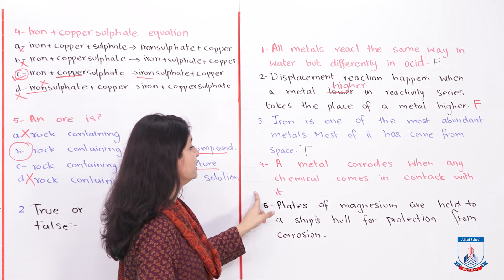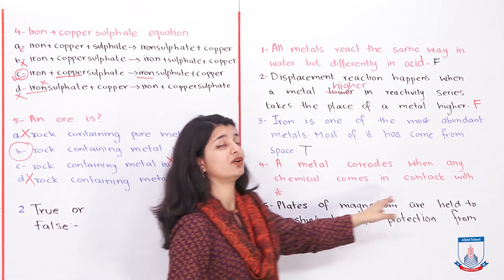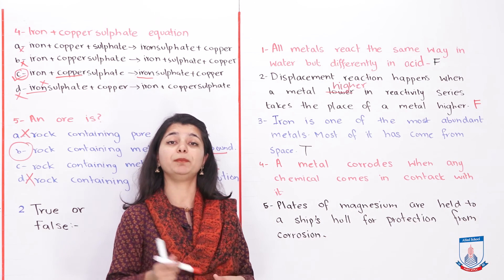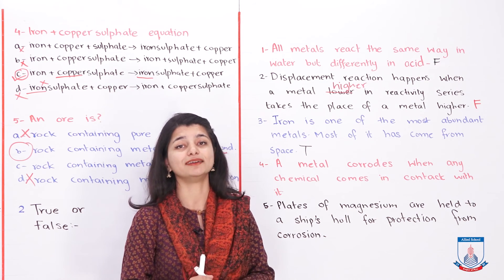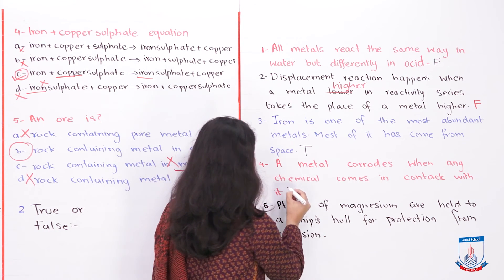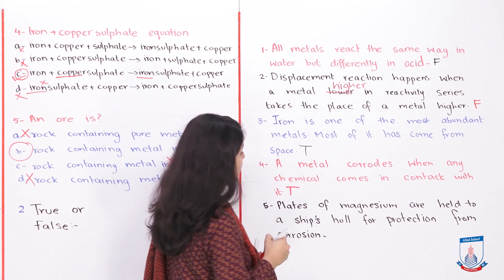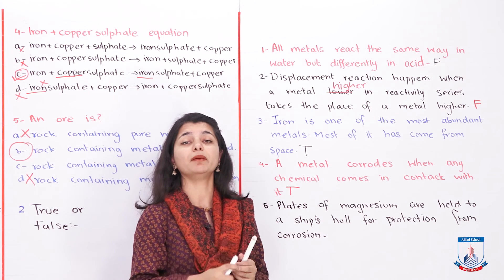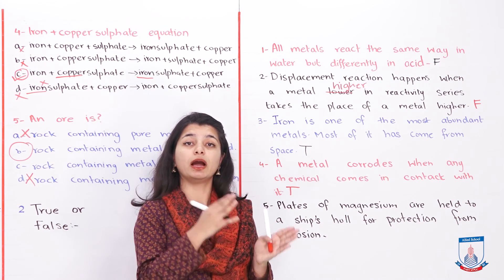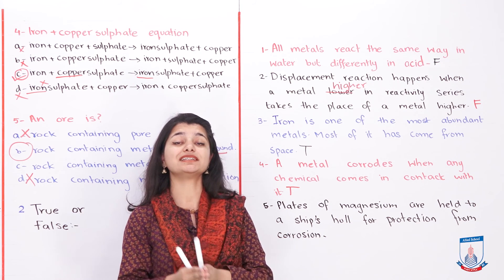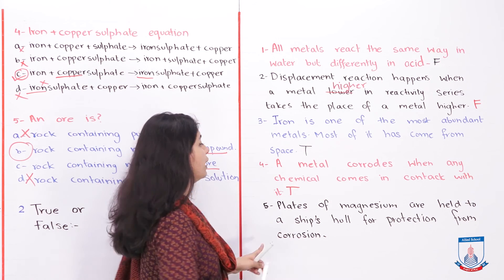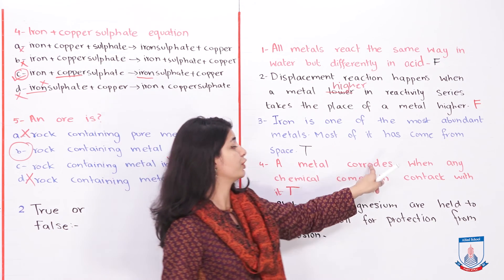Fourth statement: 'A metal corrodes when any chemical comes in contact with it.' This is true. When any chemical reacts with a metal, the metal will be corroded.